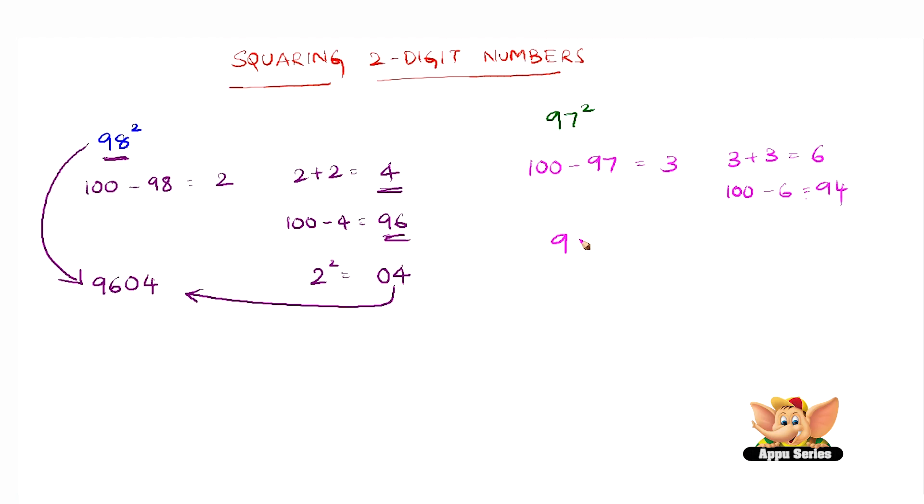Now let us write 94 as the first two digits of the answer of 97 the whole square. Now what we have to do is find the square of 3, which is 9.